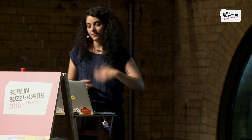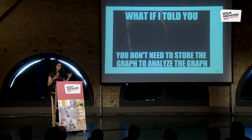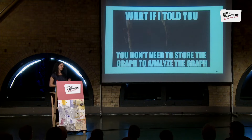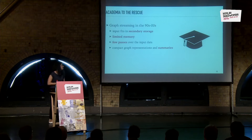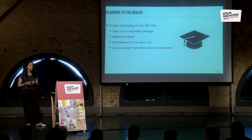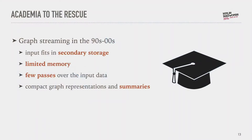So how do we maintain this dynamic graph in memory at all times? Well, what if I told you you don't need to store the graph to analyze it? You don't need the structure of the graph to get useful metrics from a graph. This is different from what we've been doing so far, but it's possible. And it's not a new idea — it was actually introduced 20 years ago, or even earlier, in a quite different context. Graph streaming is a concept developed in academia to solve a quite different problem, but I think we can learn something from it.